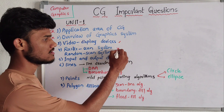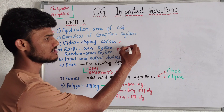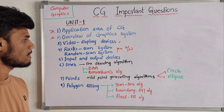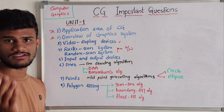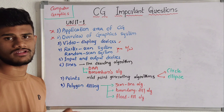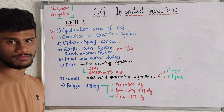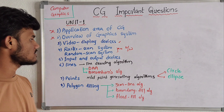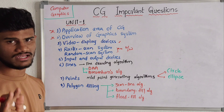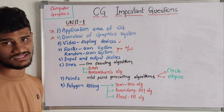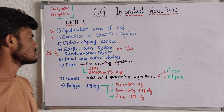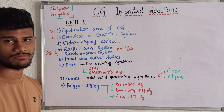Then we have raster scan and random scan — both are very very important questions. They majorly ask about the differences between raster scan and random scan. You need to explain the raster scan system and the random scan system individually, including their pros and cons.